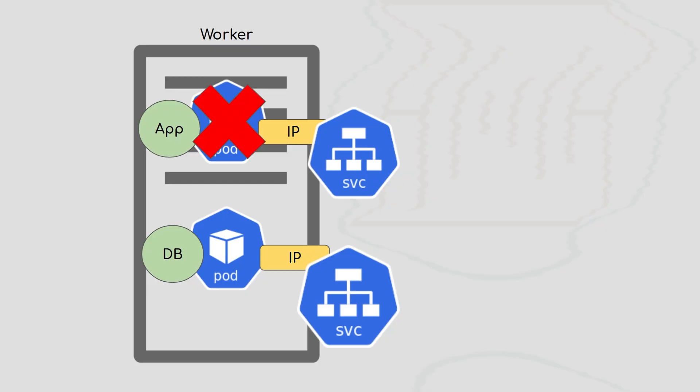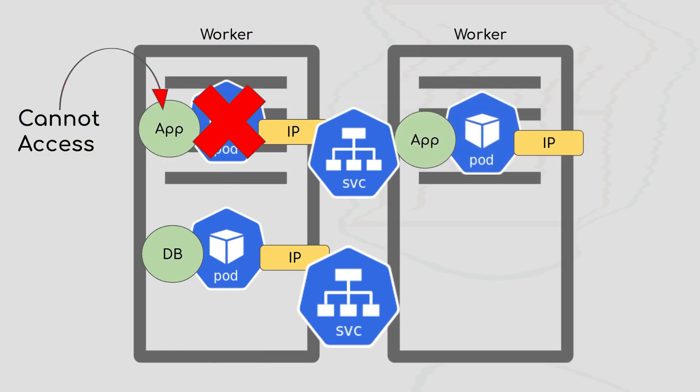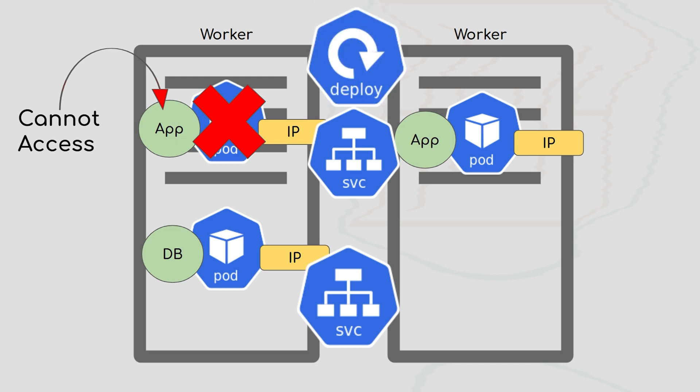Consider that your main application pod is destroyed and a new pod is being created. It takes some time, and meanwhile users trying to access the application won't be able to. High availability and high scalability are not yet achieved. To achieve high availability, you need a replica of your application — replicate the pods, services, database pods, and everything, connecting all replicas to your services which are load balanced.